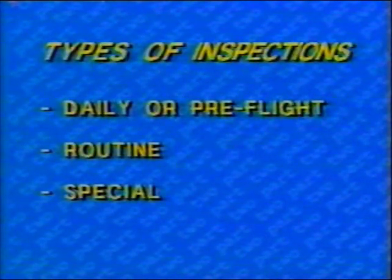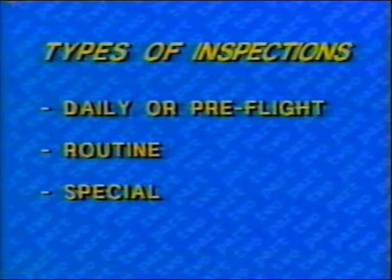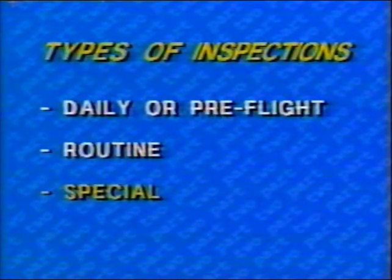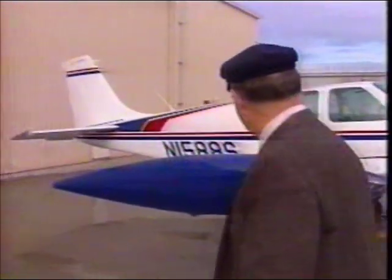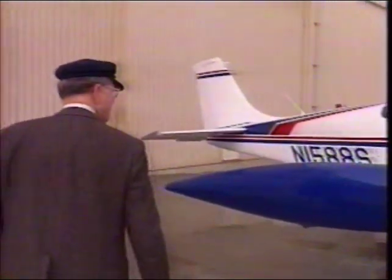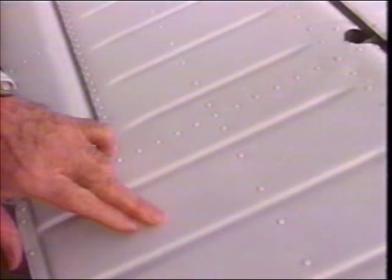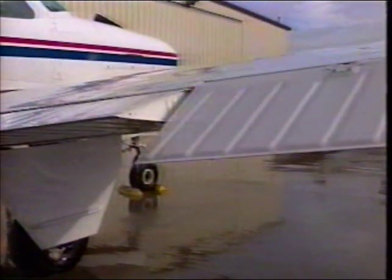Regularly scheduled inspections are imperative to detect corrosion on your aircraft. There are generally three types of corrosion inspections which can be accomplished: daily or pre-flight inspections, routine corrosion inspections, and special corrosion inspections. During each type of inspection you will be looking for visible signs of corrosion or corrosion products — specifically, chipped or missing paint exposing bare metal to the environment, bubbles in the paint which may indicate corrosion has formed on the metal underneath, and excessive moisture or standing pools of water.